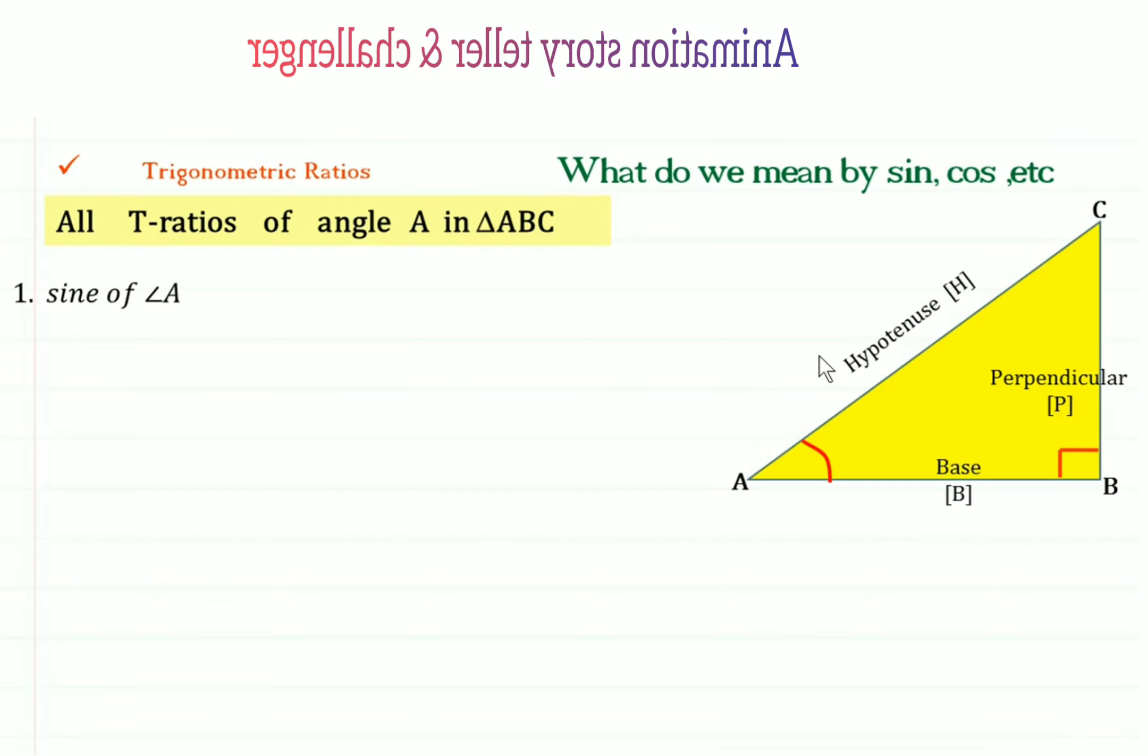T-ratios have a complete meaning when they are taken for some angle. For example, here we have taken sine of angle A. So sine has only the complete meaning when it is taken for some angle. So the first T-ratio is sine of angle A.